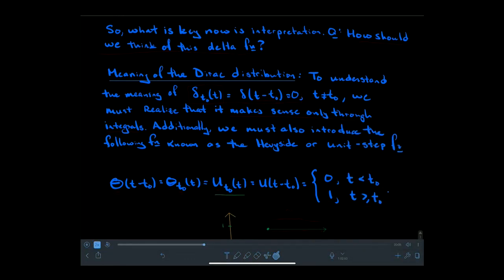What we want to think about is the interpretation of what we've just stated. We have this time-dependent function which we think of as an external forcing to the mass-spring system, which gives a finite amount of energy in an instantaneous moment in time. So how should we think about this delta function?